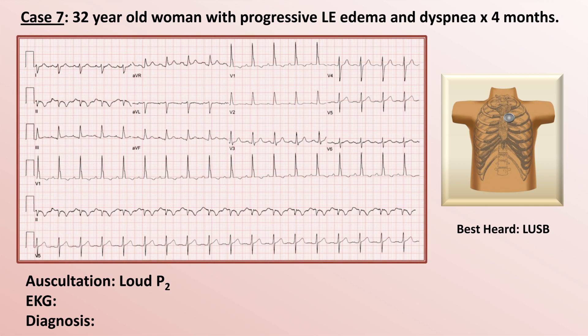Now her EKG. There are quite a number of abnormal findings. First, the rate is a little fast. Using the 10-second rule — counting the number of beats across the tracing and multiplying by 6 — we get 18 times 6, or 108 beats per minute. The rhythm is sinus.